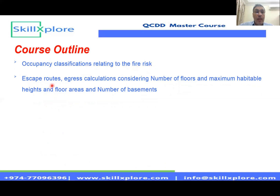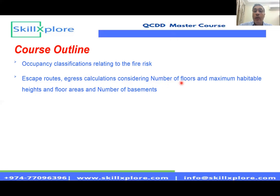Most importantly for the civil defense, we'll talk about the escape route, the exit widths, and the egress calculations. These calculations are mainly related to the architect rather than mechanical, but we have to understand how they calculate it and what needs to be considered during construction — including the number of exit routes and exit doors, and the maximum habitable floor height requirements.